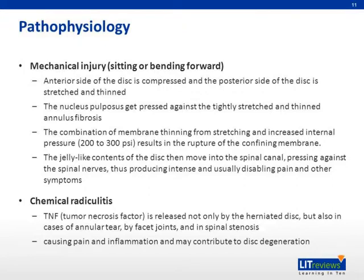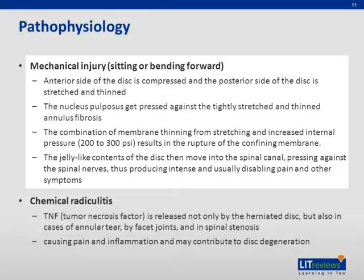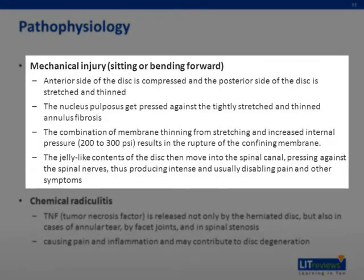Two mechanisms may account for the pain associated with herniated lumbar disc: mechanical injury and chemical radiculitis. In mechanical injury, the anterior side of the disc is compressed and the posterior side is stretched and thinned while sitting or bending forward. The nucleus pulposus gets pressed against the tightly stretched and thinned annulus fibrosus, and the combination of membrane thinning and increased internal disc pressure results in rupture. The jelly-like contents then move into the spinal canal, pressing against the spinal nerves and producing intense, usually disabling pain.